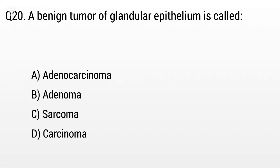Question 20. A benign tumor of glandular epithelium is called: Option A: Adenocarcinoma, B: Adenoma. The right answer is Option B: Adenoma.